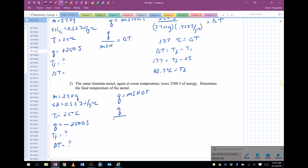My Q is negative 2500, my mass is 27, specific capacity 0.523. Put that in your calculator.